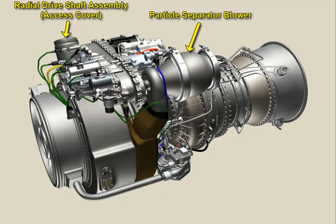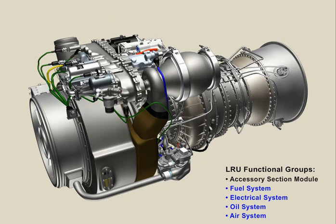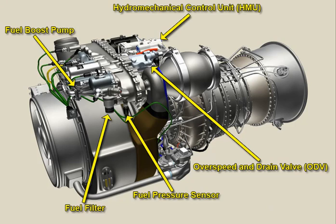The accessory section module LRUs are the radial drive shaft assembly, access cover, and particle separator blower. The fuel system LRUs are the fuel boost pump, hydromechanical control unit (HMU), the overspeed and drain valve (ODV), the fuel pressure sensor, and the fuel filter.